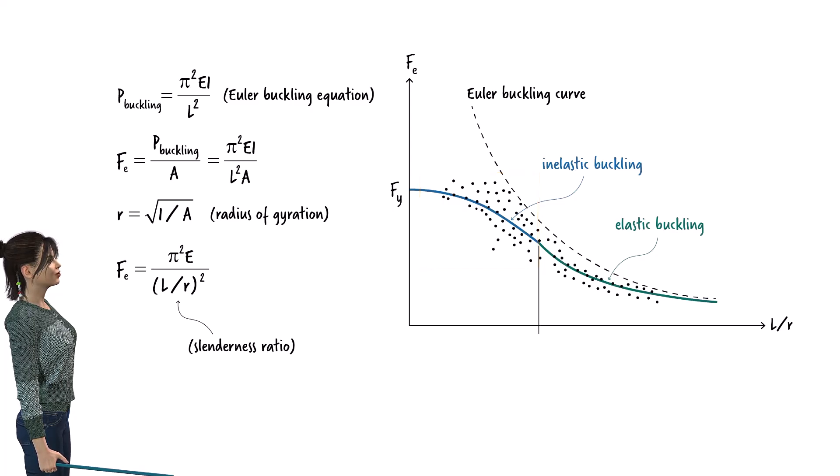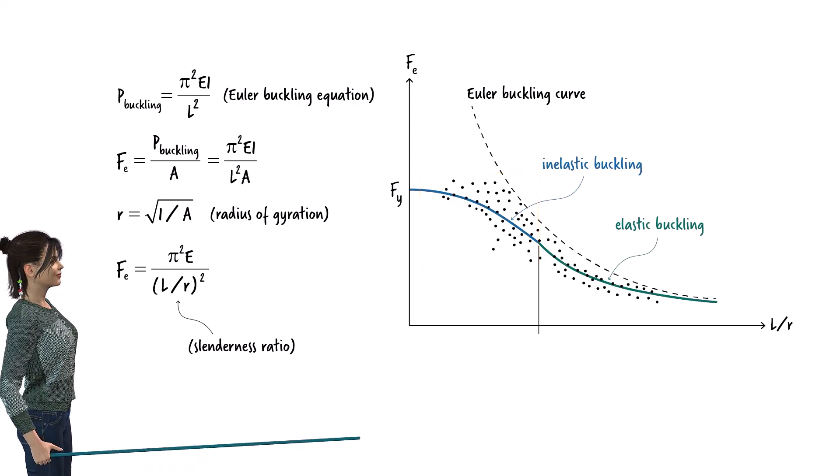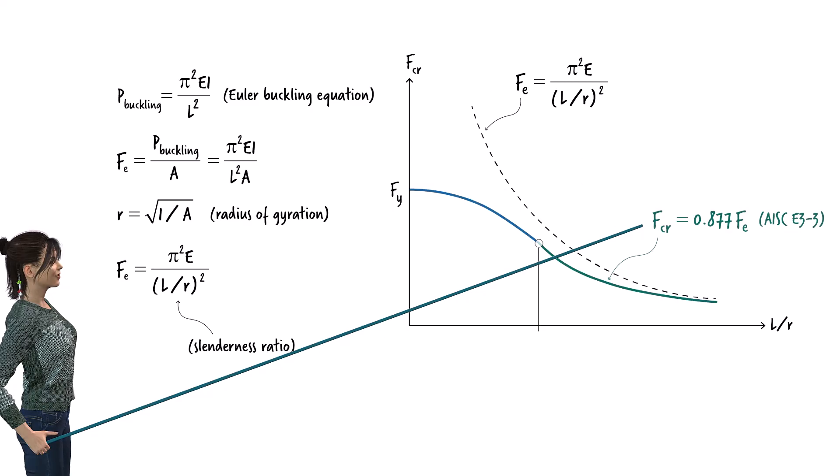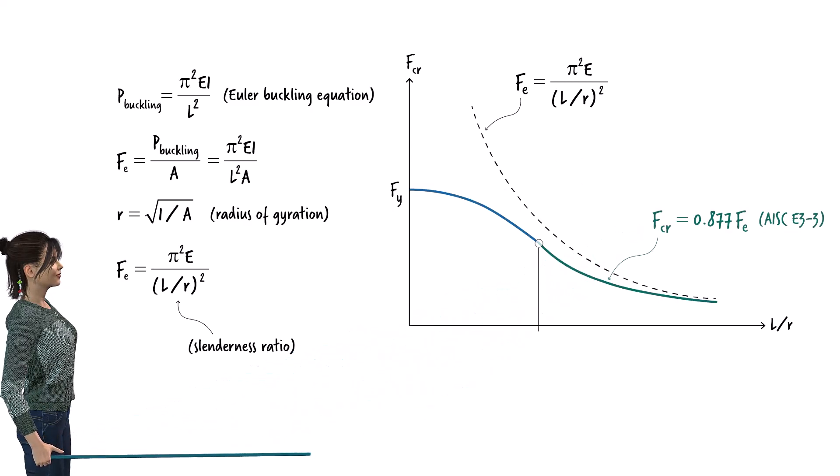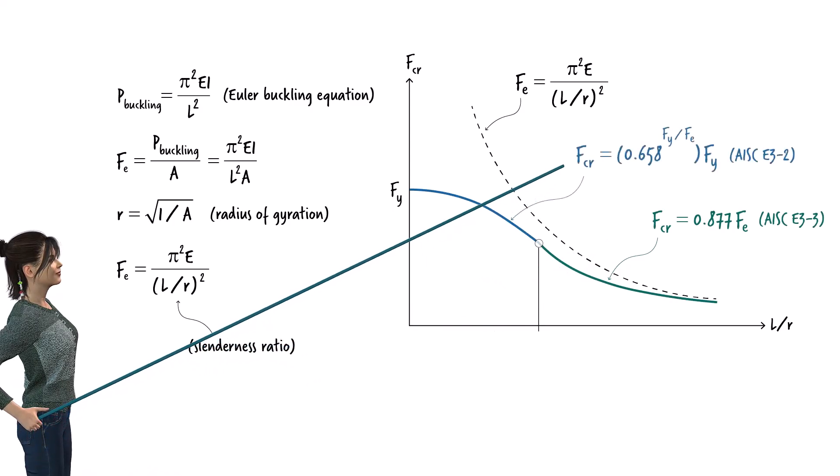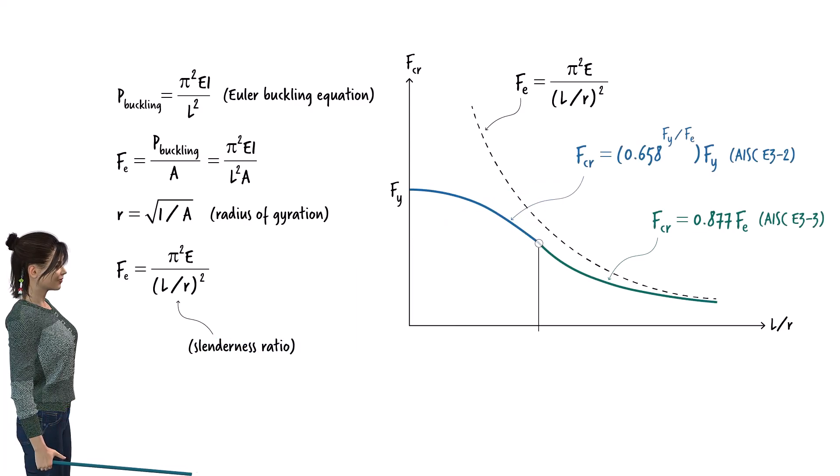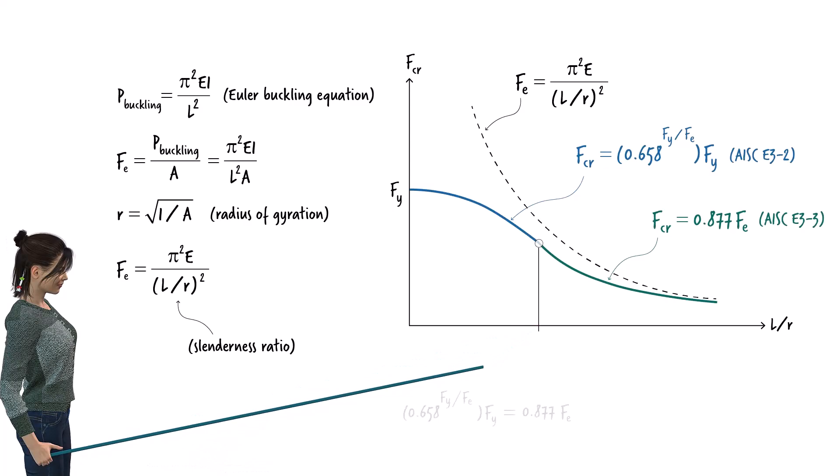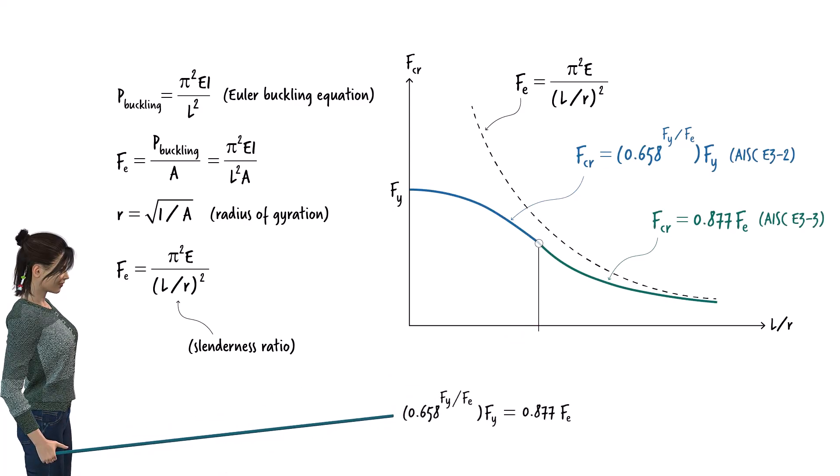The equation for the elastic part of the curve is shown. This is equation E3-3, given in the AISC manual. And the equation of the inelastic region of the curve is given. To determine the slenderness ratio value at the intersection of these two regions, we can equate the two AISC equations and solve for L over R.